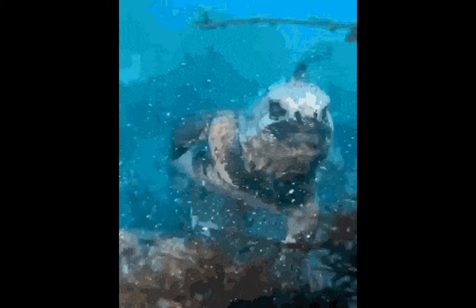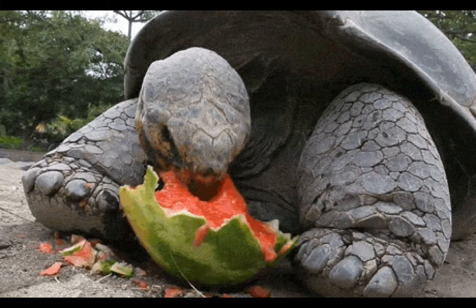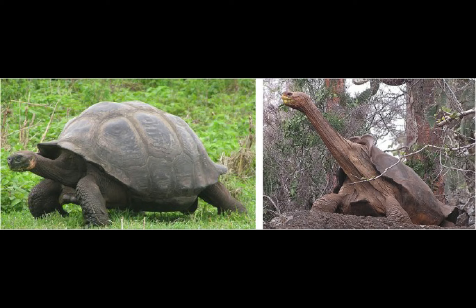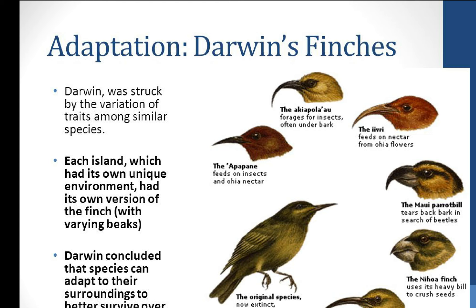He observed weird animals such as sea-swimming iguanas and giant tortoises. These giant tortoises differed from one island to the next — on islands with low plants he found short-necked tortoises, and on islands with high cacti and trees there were long-necked tortoises.